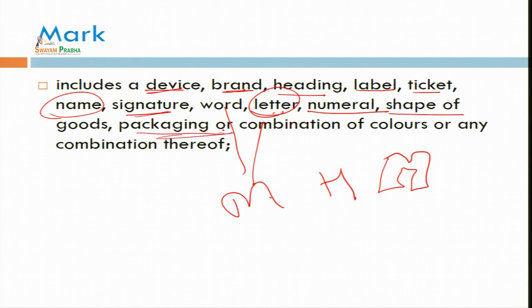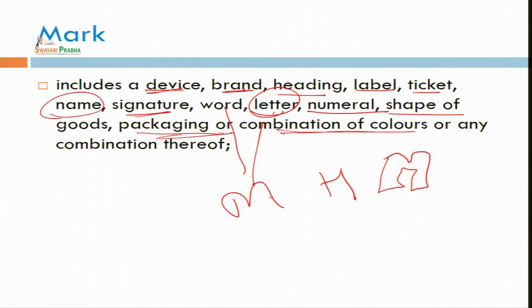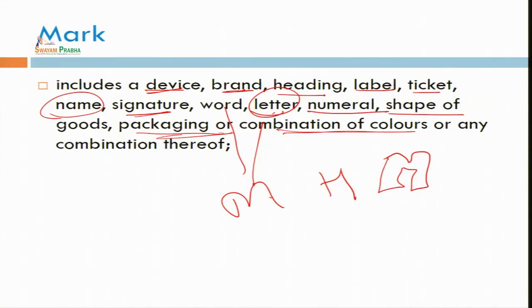It may be packaging also. Non-conventional trademarks are also there, which we will discuss in detail in the next lecture. Packaging is also included under this mark. There may be a combination of colors also — we can take the example of the John Deere tractor, where the trademark is a sign for combination of colors. We can also take the example of Mother Teresa's sari, where the blue lines on the border are also covered under trademark. Combination of colors, packaging, or shapes — all these things are covered under trademark.